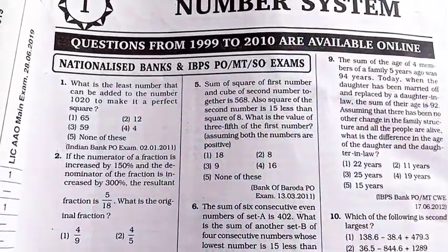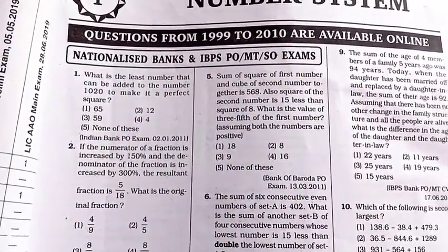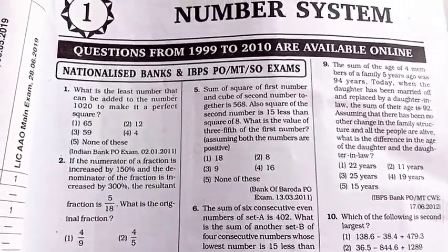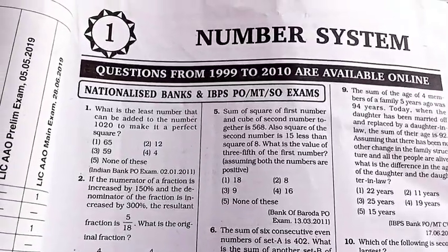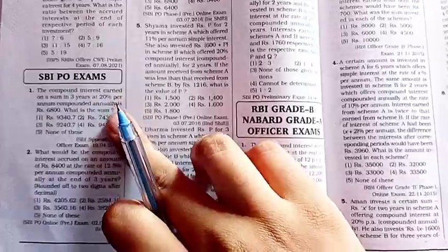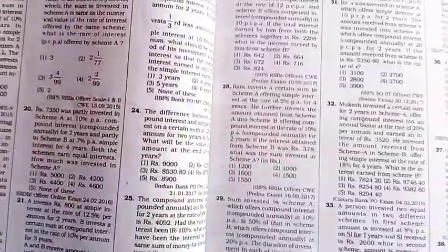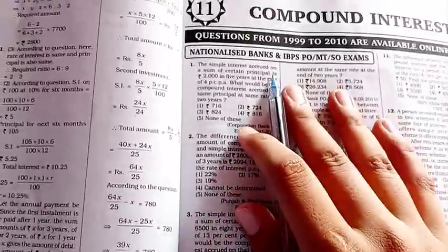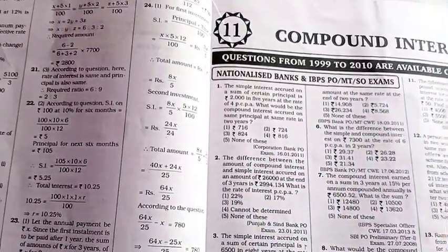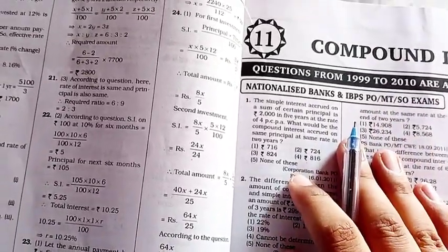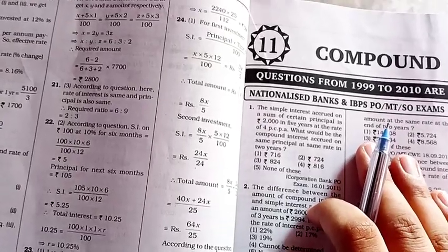This book solves that problem — if you are completing the percentage chapter, you can solve all its previous year papers in one go, and your confidence will be very high when you see percentage questions later. Paper-wise questions are also given — SBIPO, RBI Grade B, and insurance examinations. The chapter-wise arrangement is the best feature I found in this book. If you want to purchase it, the link is given in the description.